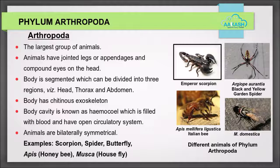Phylum Arthropoda: this phylum contains the largest group of animals. These animals have jointed legs or appendages and compound eyes on the head. Their body is segmented and can be divided into three regions: head, thorax, and abdomen. The body has a chitinous exoskeleton. The body cavity is known as a hemocoel, which is filled with blood, and they have an open circulatory system. Animals are bilaterally symmetrical. Examples: scorpion, spider, butterfly, Apis (honeybee), and Musca (housefly).